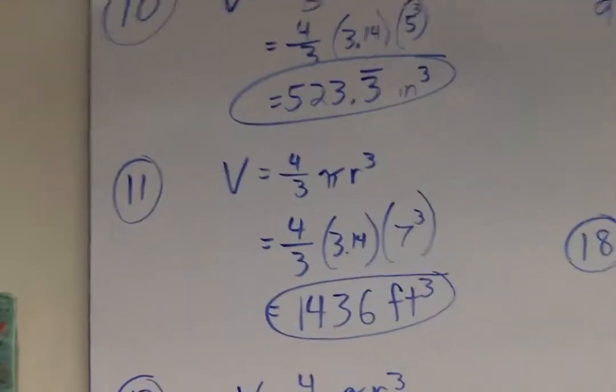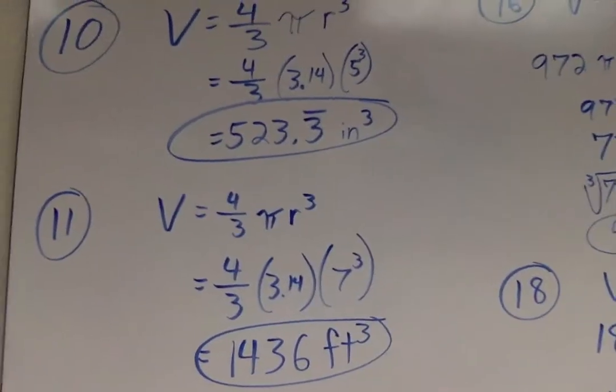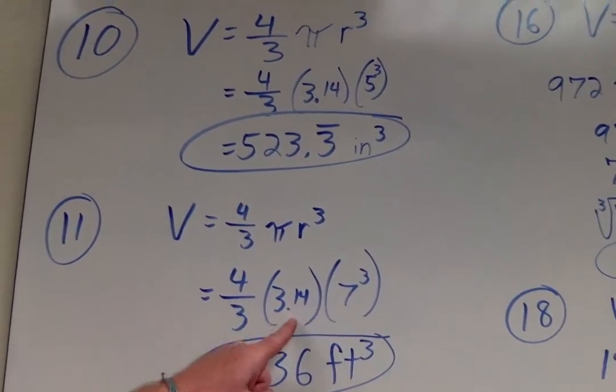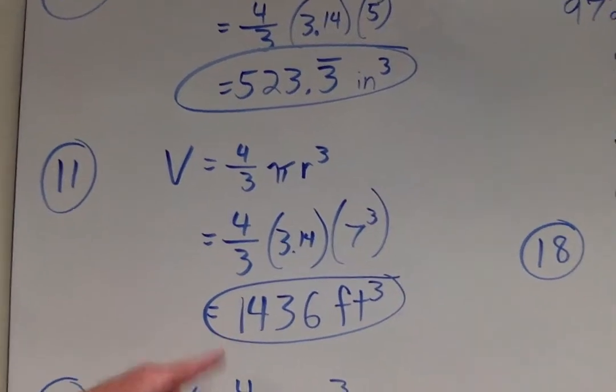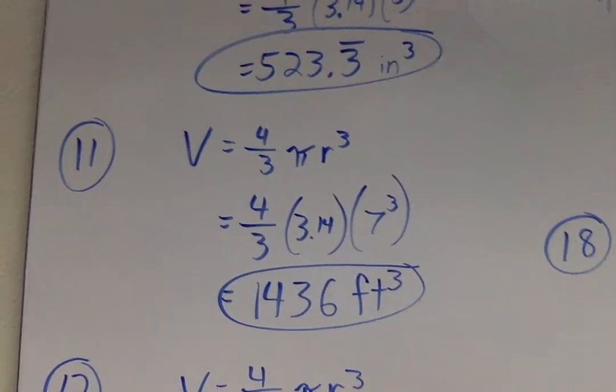Let's take a look at number 11, everybody! Number 11, same thing! The radius must have been a 7! 7 cubed times pi times 4 divided by 3! I got about 1436 feet cubed!